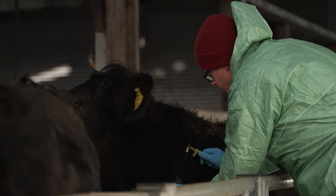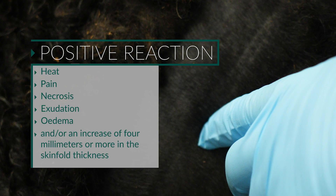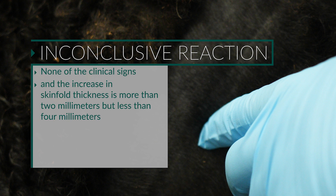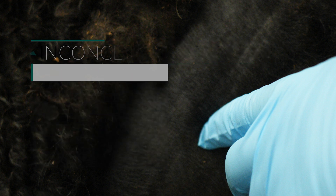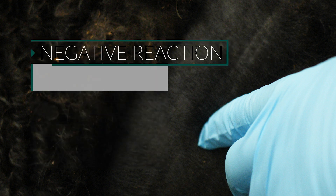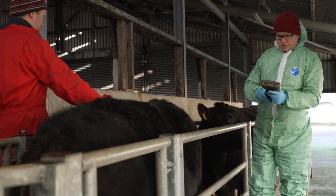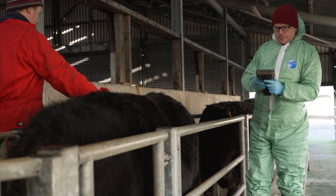The reactions at the injection site must be interpreted as follows: a positive reaction is one with clinical signs of heat, pain, necrosis, exudation, edema, and/or an increase of four millimeters or more in skin fold thickness. An inconclusive reaction is one with none of the clinical signs and an increase in skin fold thickness of more than two millimeters but less than four millimeters. A negative reaction is one with none of the clinical signs and no increase in skin fold thickness, or an increase of less than or equal to two millimeters.